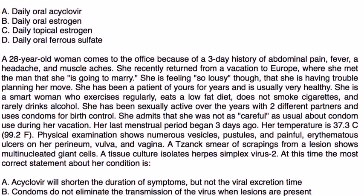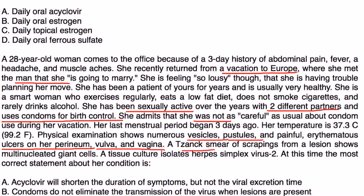And finally, a 28-year-old woman comes to the office because of a three-day history of abdominal pain, fever, headache, and muscle aches. She recently returned from a vacation to Europe where she met a man that she is going to marry. She is feeling so lousy that she is having trouble planning her move. She's usually very healthy: a smart woman who exercises regularly, eats a low-fat diet, doesn't smoke cigarettes, and rarely drinks alcohol. She has been sexually active over the years with two different partners and uses condoms for birth control. She admits that she was not as careful as usual about condom use during her vacation. Her last menstrual period began three days ago. Temperature is 37. Physical exam shows numerous vesicles, pustules, and painful erythematous ulcers on her perineum, vulva, and vagina. A Tzanck smear of scrapings from the lesion shows multinucleated giant cells. A tissue culture isolates herpes simplex virus 2. At this time, the most appropriate correct statement is...